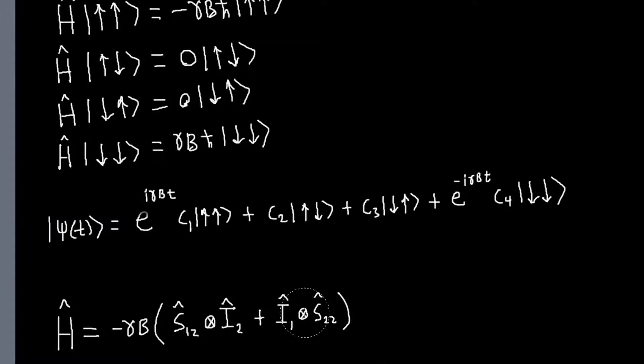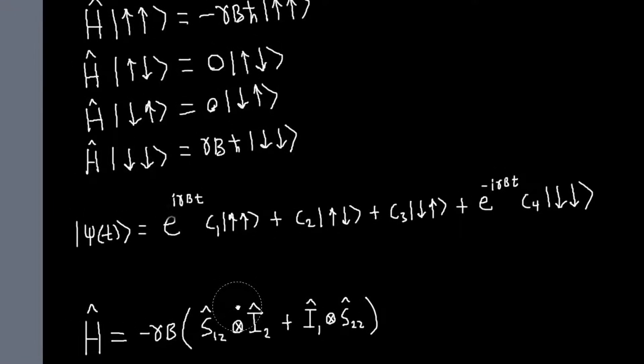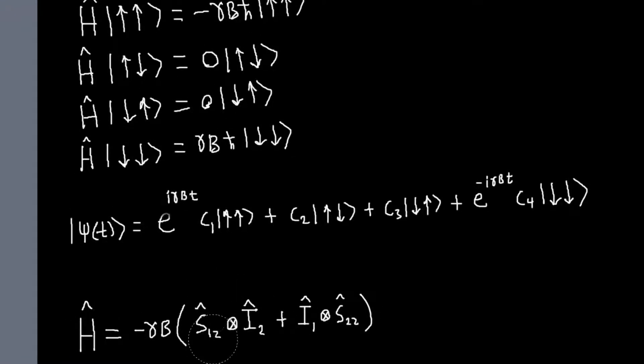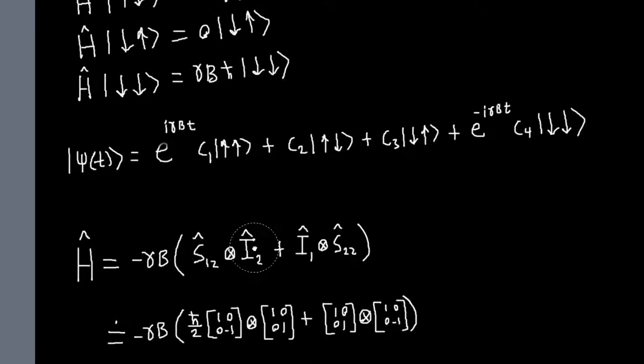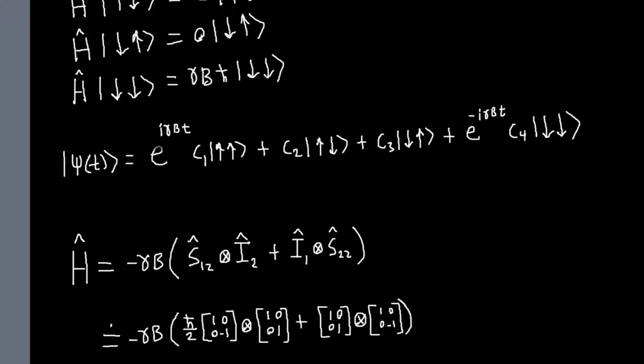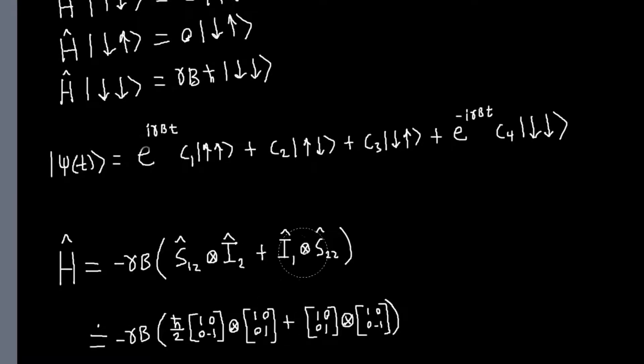So, this is what we needed to see, because these are both two-by-two matrices, are represented by two-by-two matrices. So, if I do that, I get this, and now I have the Kronecker product of two two-by-two matrices. And the Kronecker product of two two-by-two matrices gives you a four-by-four matrix.